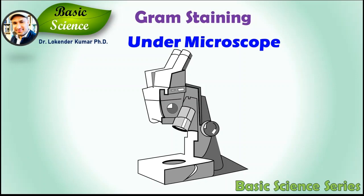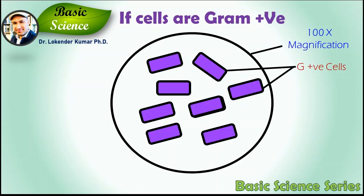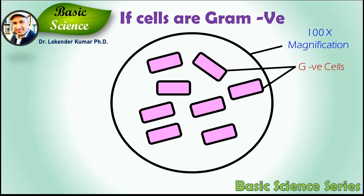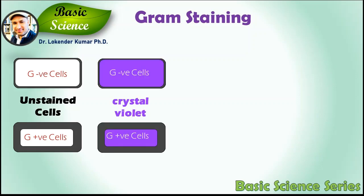Gram staining differentiates bacteria by the chemical and physical properties of their cell wall. Gram-positive cells have a thick layer of peptidoglycan in the cell wall that retains the primary stain, crystal violet. Gram-negative cells have a thinner peptidoglycan layer that allows the crystal violet to wash off. They are stained pink by the counter stain, commonly safranin or fuchsin. As you can see in the slide, gram-positive cells have a thicker cell wall compared to gram-negative cells. After step one, both gram-positive and gram-negative cells acquire the stain and appear purple.